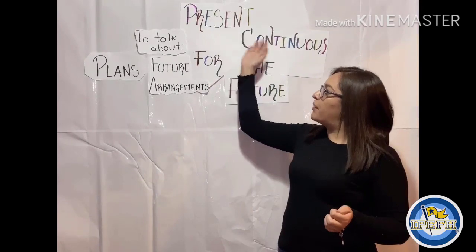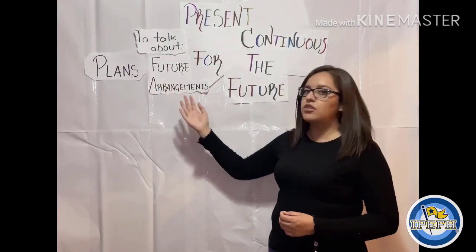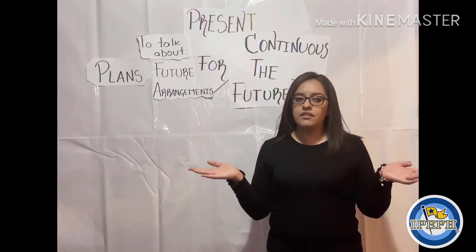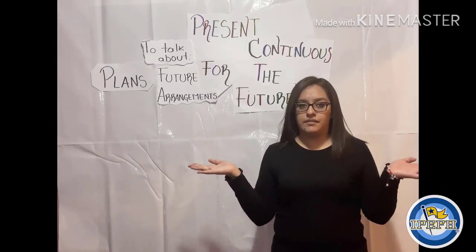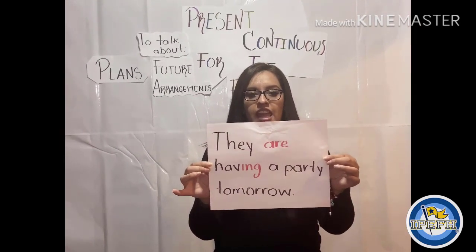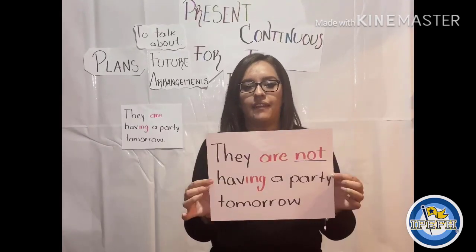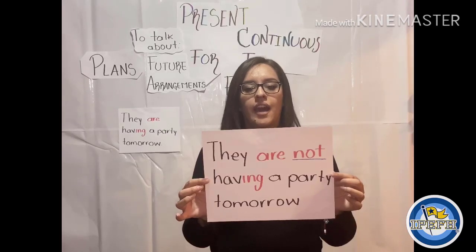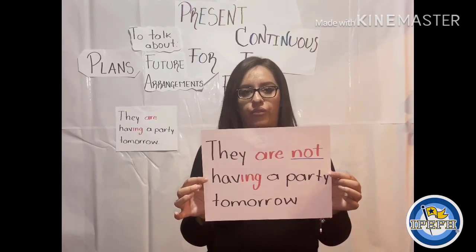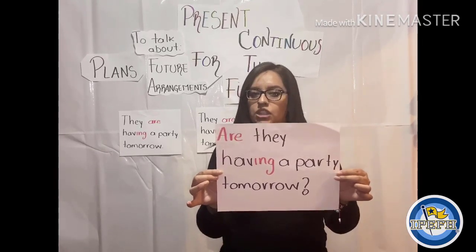You will use present continuous for the future to talk about plans or future arrangements — that means for established plans. Remember, we have three forms: affirmative, negative, and interrogative. For affirmative we have: they are having a party tomorrow. Negative: they are not having a party tomorrow. Interrogative: are they having a party tomorrow?